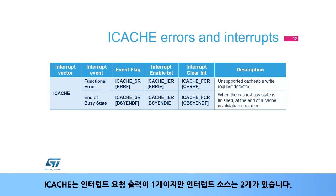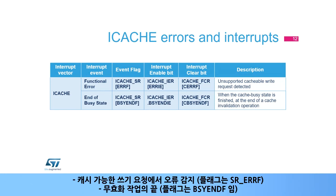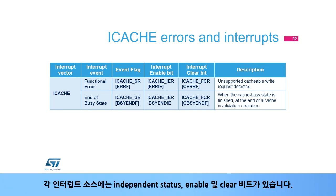The iCache has one interrupt request output but two sources of interrupts: error detection on cacheable write request, with flag SRERRF; and end of invalidate operation, with flag BSYNDF. Each interrupt source has independent status, enable, and clear bits.